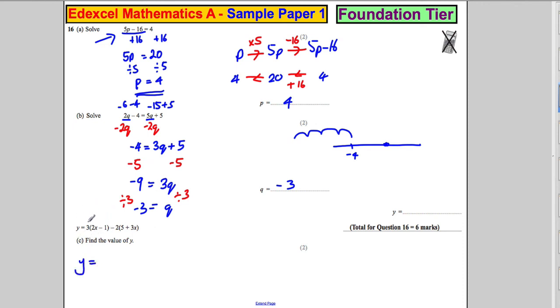Y is going to be 3 times 2X, which is 6X. And 3 times negative 1, which is negative 3. And then what we're going to do, we're going to have negative 2 times 10, which is negative 10. And negative 2 multiplied by positive 3X, which is negative 6X.